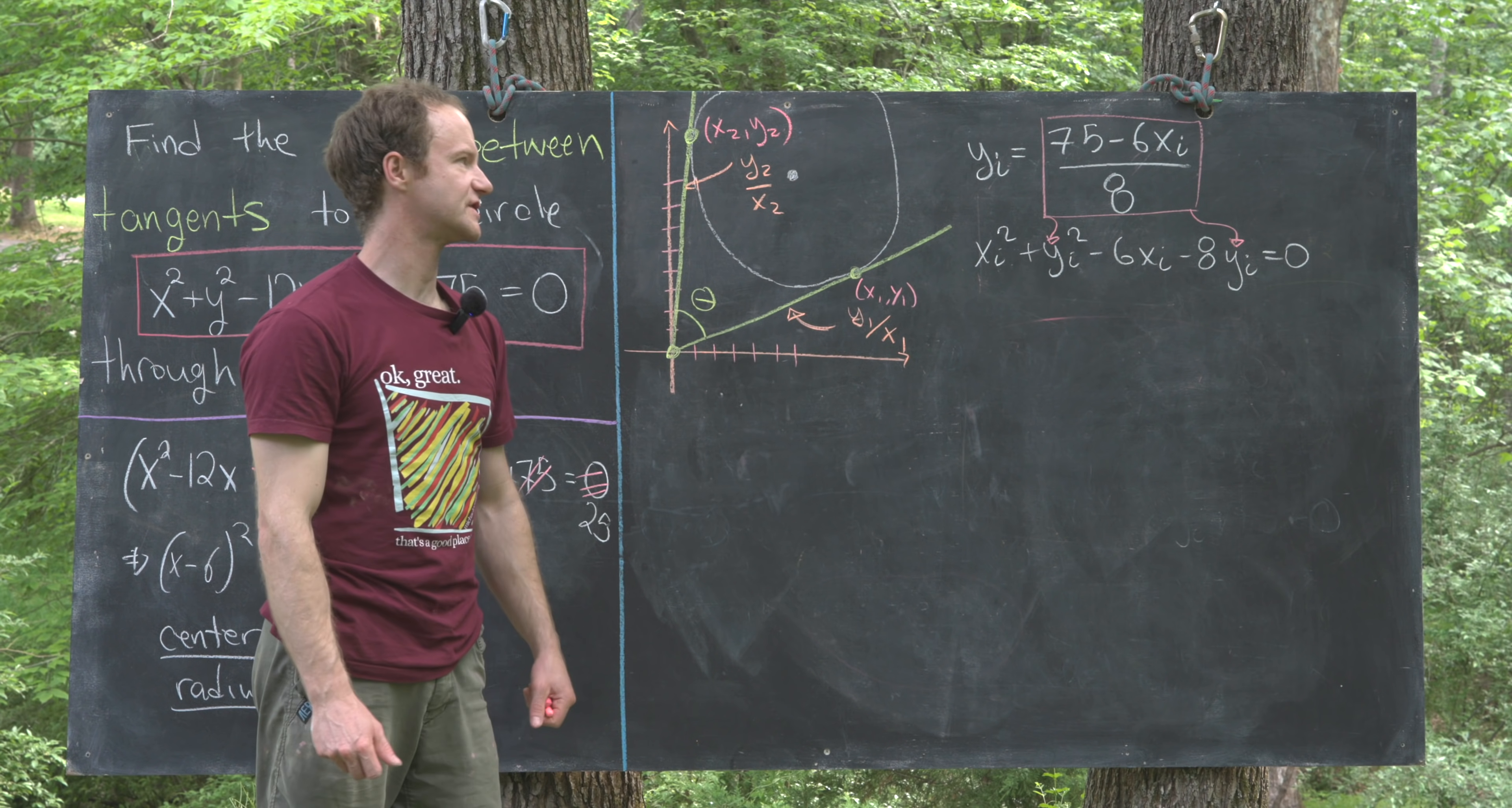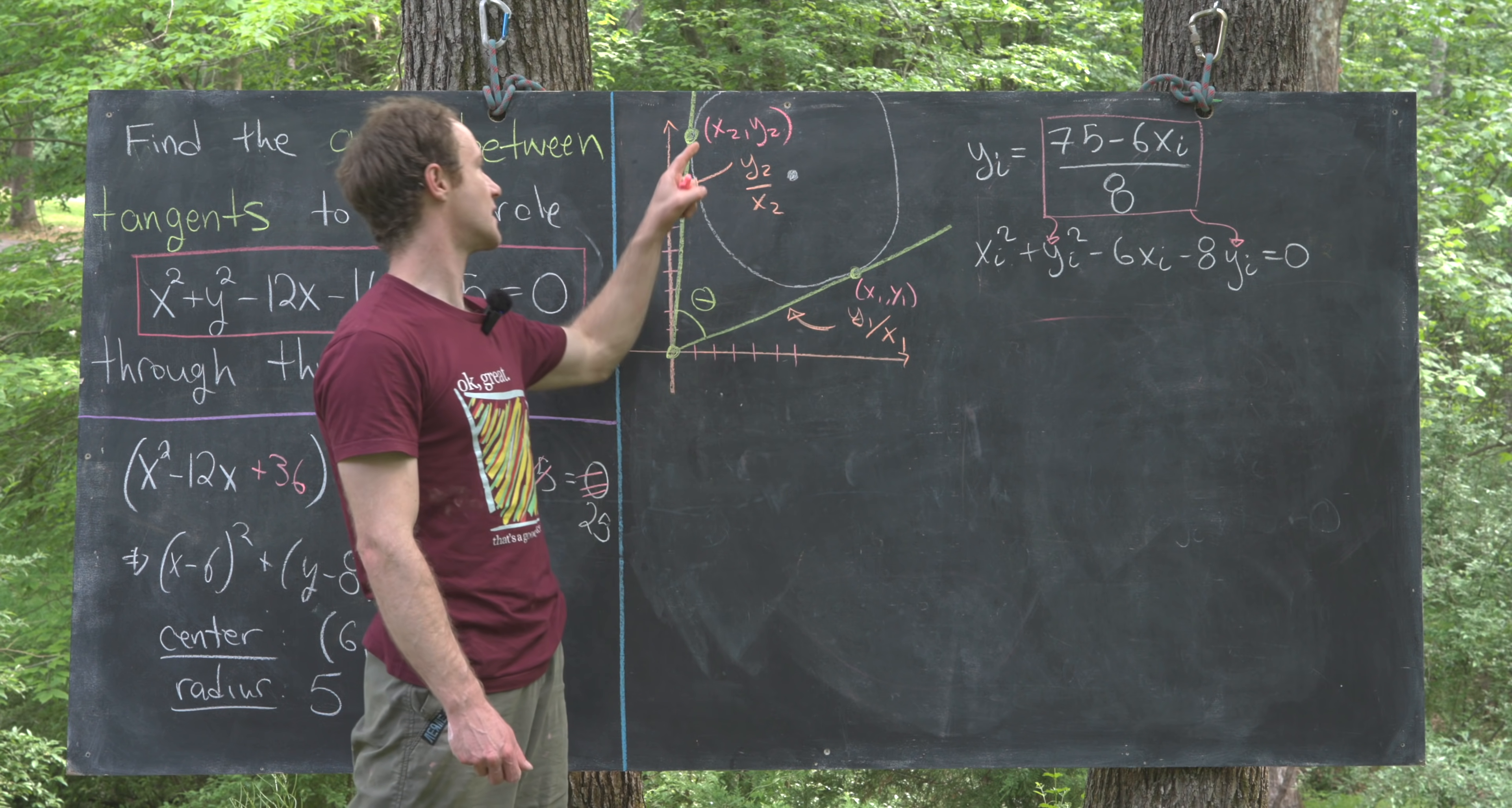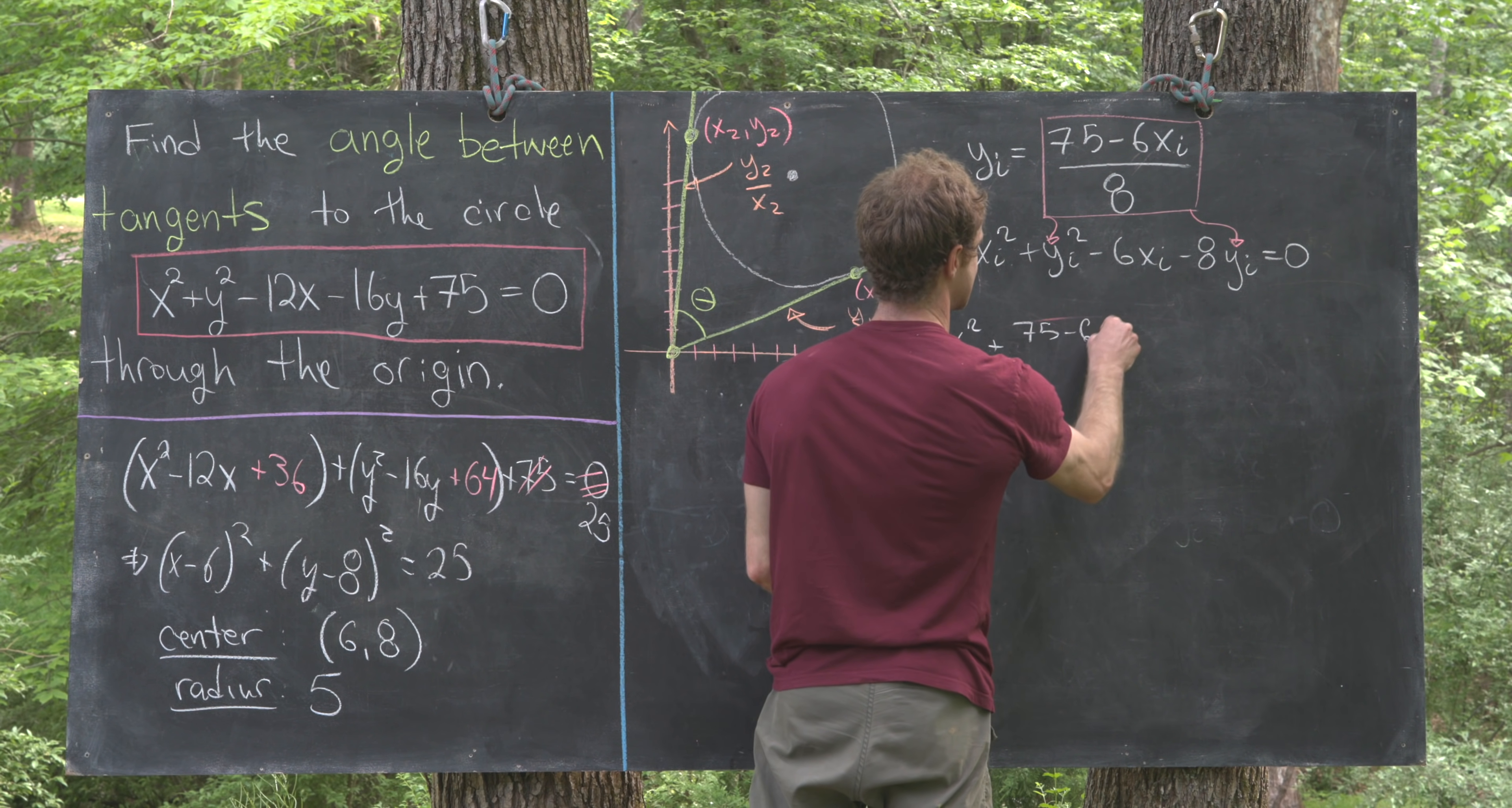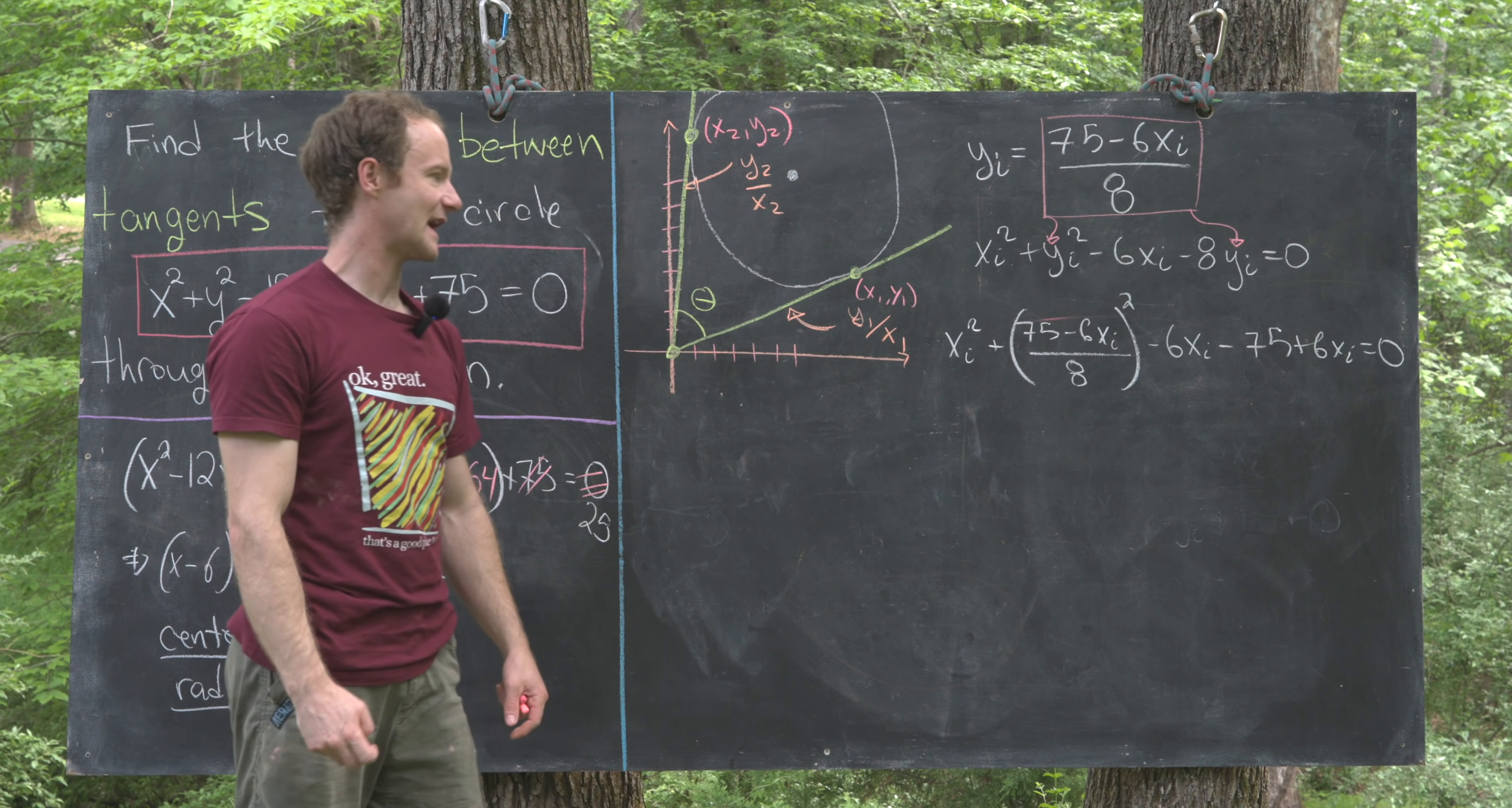On the last board, we noticed that yi could be expressed in terms of xi as 75 minus 6xi all over 8, and we had the quadratic expression in xi and yi. Now we can plug this value of yi into this quadratic expression and we'll be left with a quadratic equation for the x part. That'll allow us to solve for x1 and x2, then we can plug it in here and find y1 and y2. When we plug this value into the polynomial, we get xi squared plus 75 minus 6xi over 8 quantity squared minus 6xi minus 75 plus 6xi equals 0.